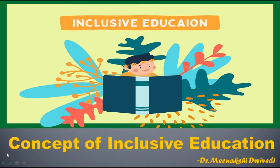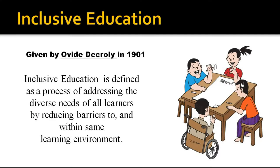In this lecture, we will study the concept of inclusive education. Inclusive education is a pedagogy wherein all the students learn together. Students with special needs spend most or all of their time with their normal peers in the same school. It is the actual merging of special education and regular education with the belief that all children are different and will learn differently, and they should have full access to the same curriculum. In 1901, Ovid D'Crawley founded a school for children with mild disabilities. He gradually invented this pedagogy which we call inclusive education. It can be defined as a process of addressing the diverse needs of all learners by reducing barriers to and within the same learning environment.